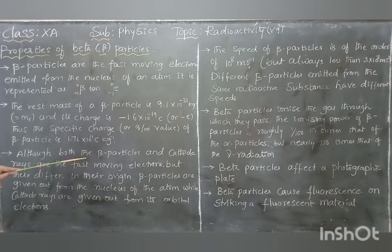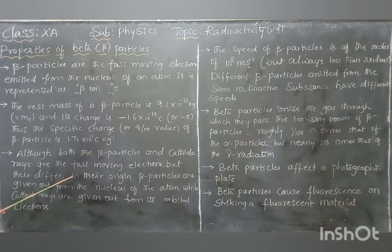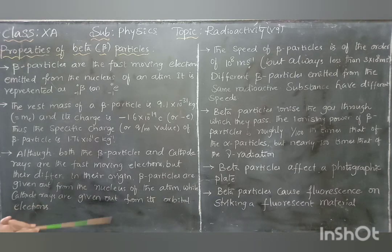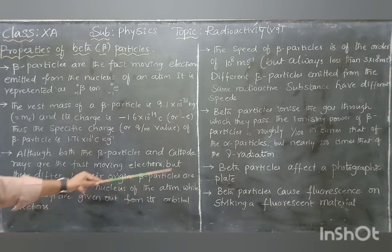Both beta particles and cathode rays are fast-moving electrons, but they have a different origin. Beta particles come out from the nucleus of the atom, whereas cathode rays are electrons that come from orbital electrons. So depending upon the origin it is different — if it comes from the nucleus it is called a beta particle; if it comes from the orbital electrons moving around the nucleus, it is treated as cathode rays.